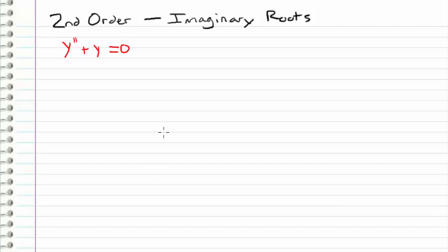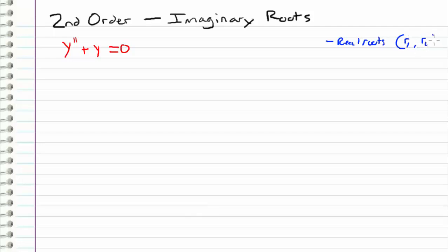Today we're going to take a look at the imaginary roots case for the constant coefficient homogeneous second order linear differential equation. This is the second case we've covered. Previously we looked at real roots, corresponding to the case where R1 and R2 were real. Now we're going to look at imaginary roots. Next time we'll look at complex roots, and then repeated roots.